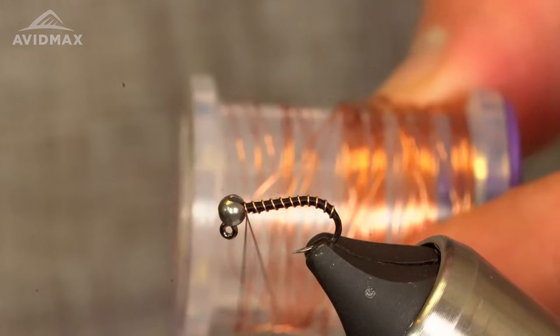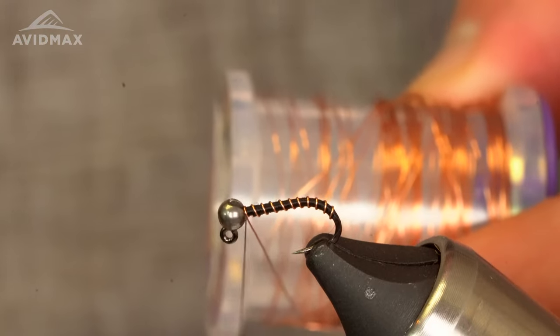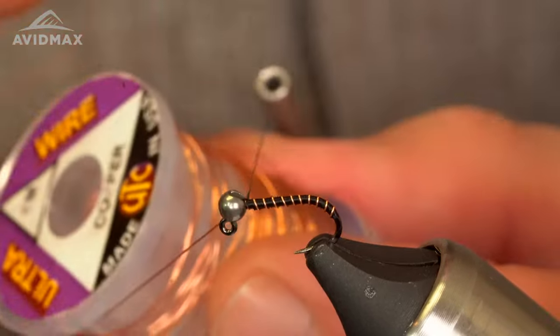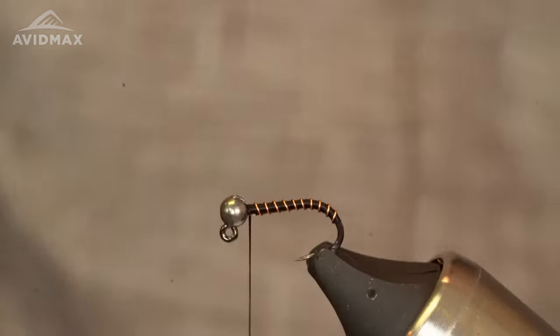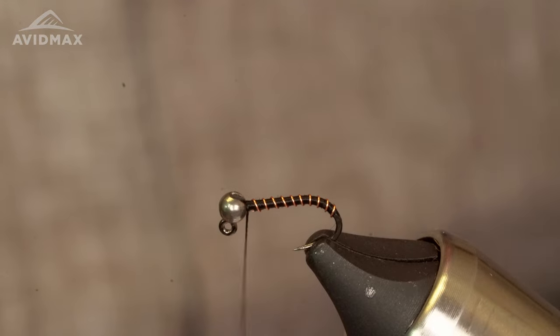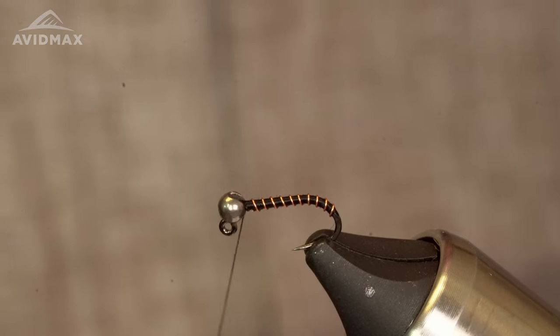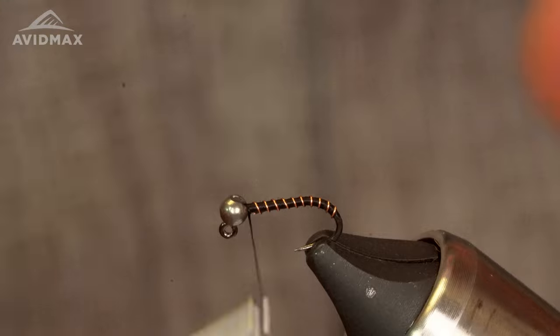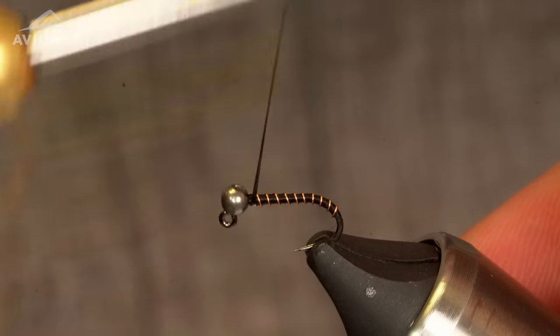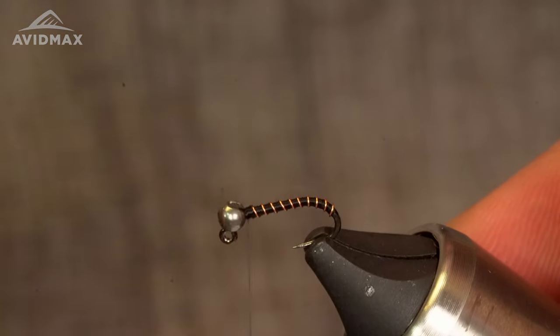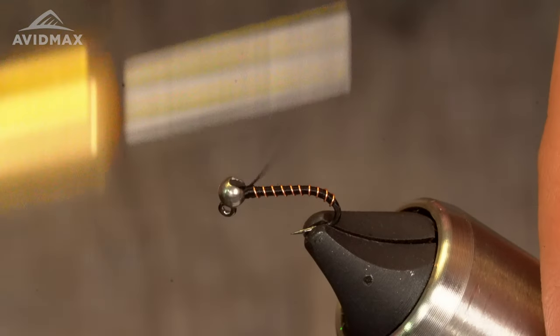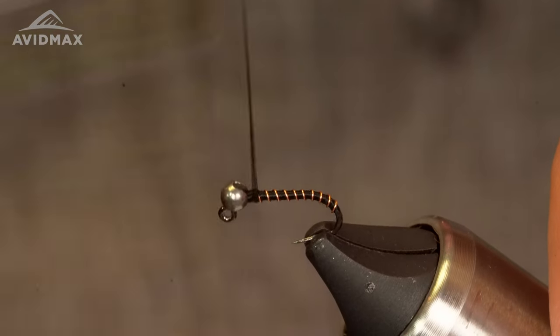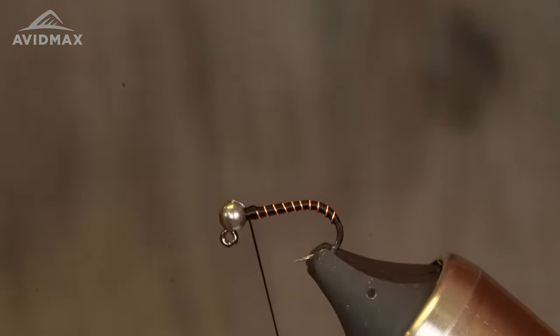Once we're back at the head, secure the wire once around, twice around, thrice around, and we can helicopter it off. A couple more wraps, build up a little bit of taper right at the head maybe, even it out. There we go.